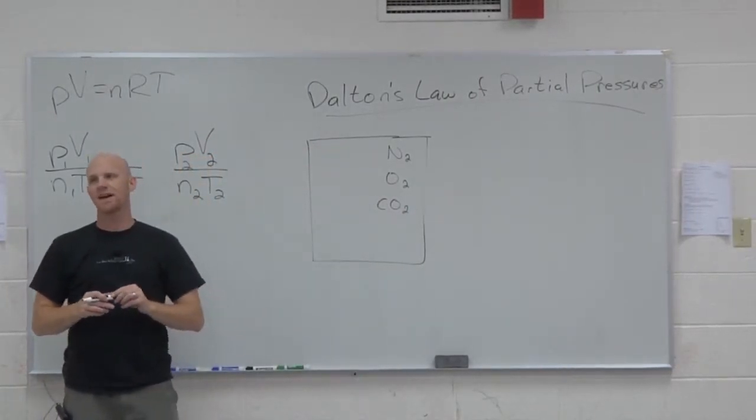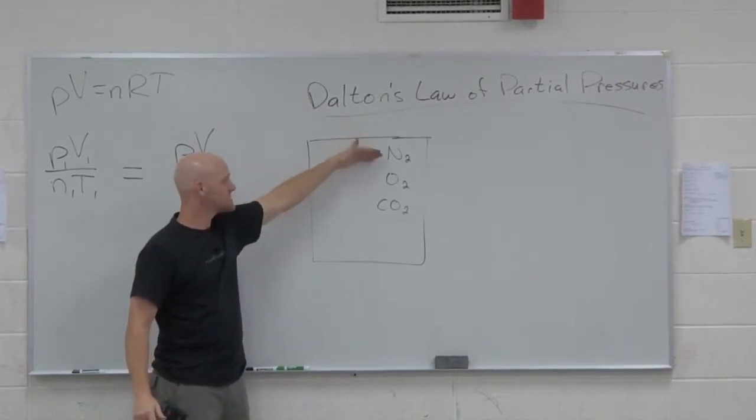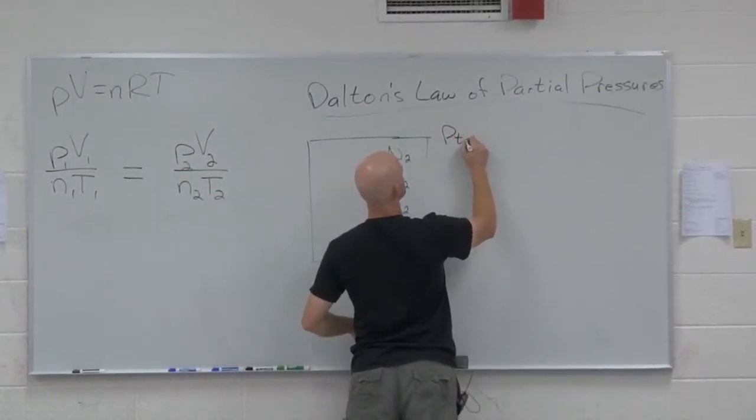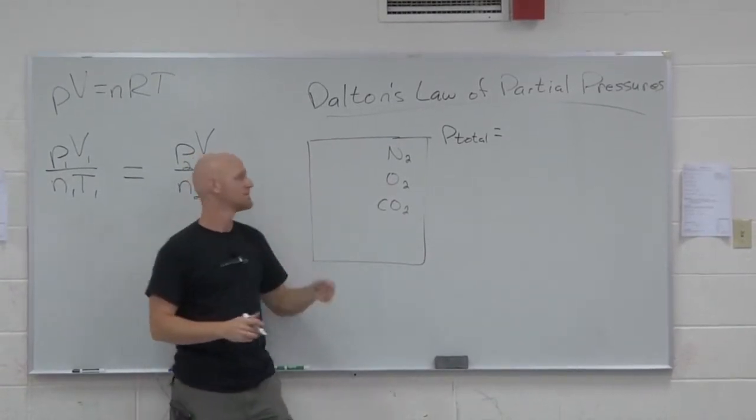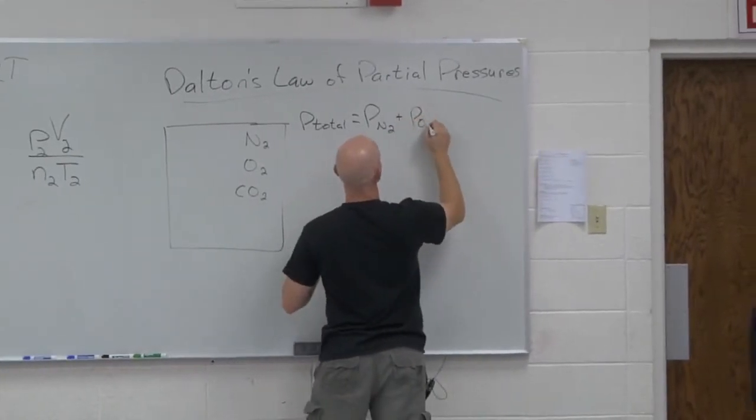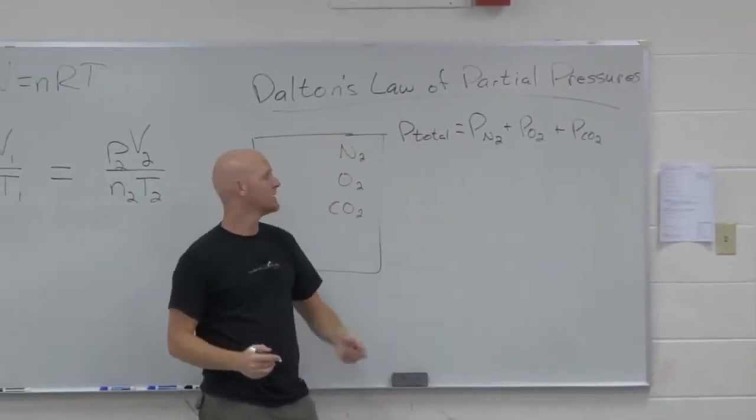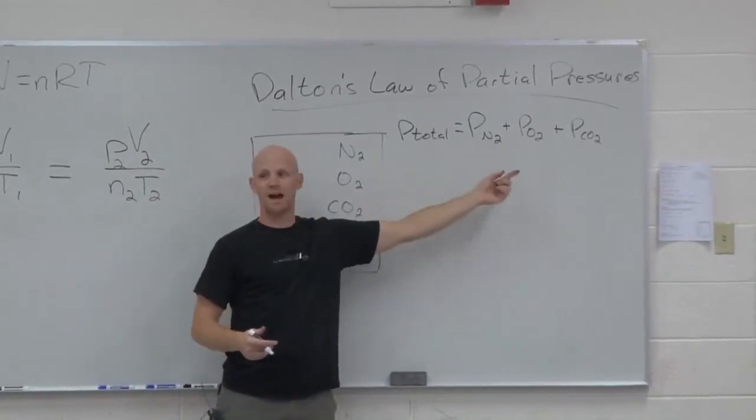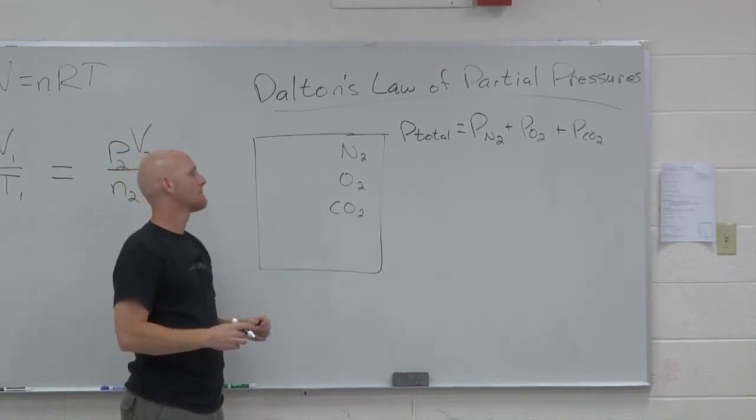So Dalton's law of partial pressures. If I had a sealed vessel, a closed vessel here, that had N2, O2, and CO2 in it, Dalton's law of partial pressures would tell me that the total pressure inside that vessel would equal what? All of them. Yeah. All of their corresponding partial pressures added together. So in this case, pO2 plus pN2 plus pCO2. That's what the total pressure would be. And a partial pressure is just the part of the total pressure that a particular gas is responsible for.